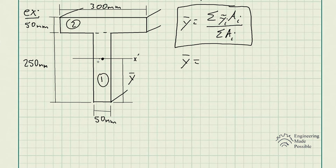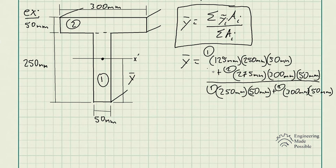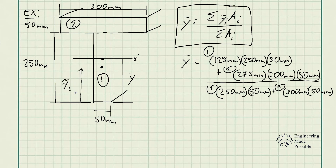First, split the geometry into its simpler components — rectangle number one and rectangle number two. For the first area, rectangle one, the length is 250 millimeters and the width is 50 millimeters, giving an area of 250 × 50. The y-bar for this rectangle — keeping in mind we're measuring from the bottom of the T-beam — is half of 250, so 125 millimeters. We multiply that centroid distance by the area.